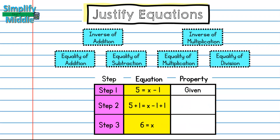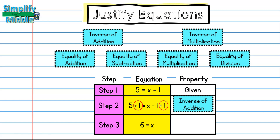Here I have the equation 5 = x − 1, which is given. I look at what's happening to x: it's being subtracted by 1. I can do the inverse of that — adding 1 — to make the −1 go away, because −1 + 1 = 0. That's the inverse property of addition. Because I added 1 to both sides, that also shows the equality property of addition.